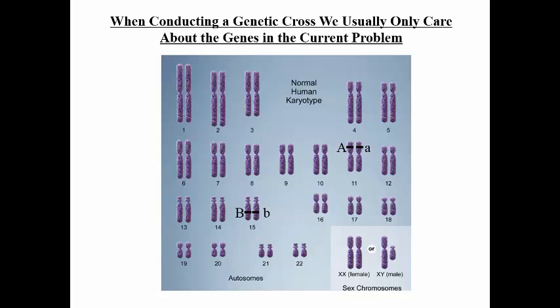Always keep in mind that these are not the only two genes that exist in this individual — there are thousands of genes. There could be other genes; for example, on chromosome 1 you might have gene C, on chromosome 5 they might have two copies of gene D (I drew it homozygous recessive just to show a different genotype), or on chromosome 6 we might see gene E drawn as homozygous dominant. There are many, many genes that can exist, but we only care about the two that are in the problem.